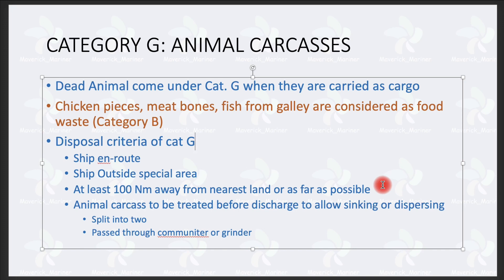The third point: the ship must be at least 100 nautical miles away from the nearest land — and as far as possible. If the ship is going from point A to point B, you can only dispose of animal carcass when the ship is at least 100 nautical miles away from the nearest land. During passage planning, if a section of your route shows the ship around 500 miles away from land, that is when we should dispose of animal carcass — not just at 100 miles, but we'll try to do it as far as possible from land.